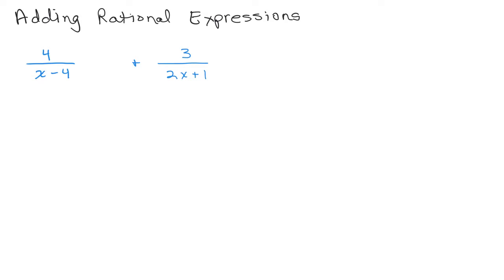4 over x minus 4 plus 3 over 2x plus 1. Now notice I've left some space between the first fraction and the plus sign over here. The reason is because I do not have a common denominator, so I'm going to have to multiply the numerator and denominator by something to make an equivalent fraction. The first thing to notice here: 4 over x minus 4 — x minus 4 is the denominator. x is not a factor, 4 is not a factor; it's this entire expression, x minus 4. Same thing over here with the second fraction: 2x plus 1 is the denominator. It's only one factor in each fraction.